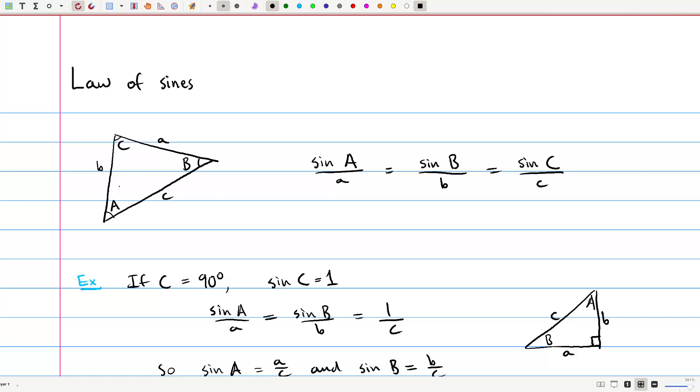Let's say that we have a triangle whose angles are measured A, B, and C. Those are capital letters. And the opposite side to each angle are in lowercase. So the opposite to big A is little a, opposite to big B is little b, and opposite to big C is little c. It's a little hard to see here, but hopefully the pattern makes sense.